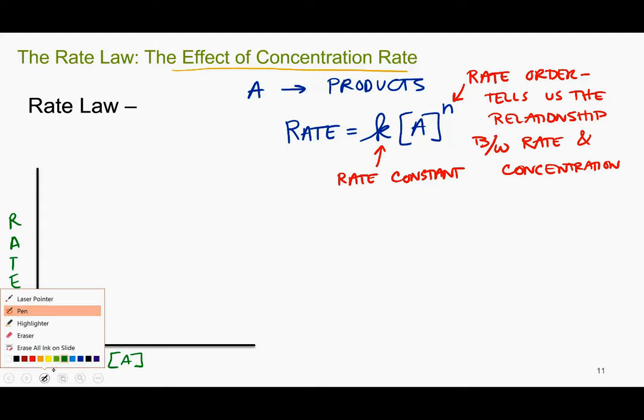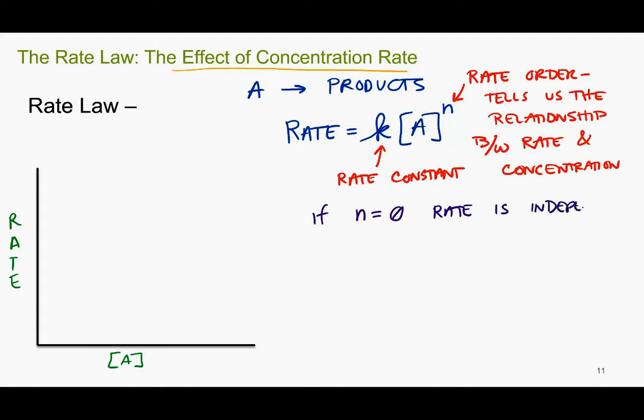If n equals zero, which we call a zero-order reactant, the rate is independent of the concentration. So what does that mean? If we increase the concentration or decrease the concentration, what happens to the rate? It would be the same, nothing happens. So graphically, that would look like this: a flat rate, no matter what happens to the concentration.